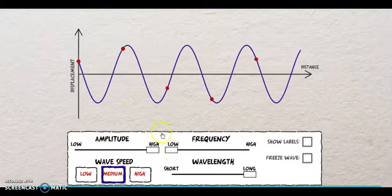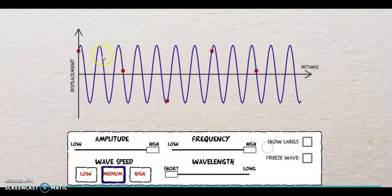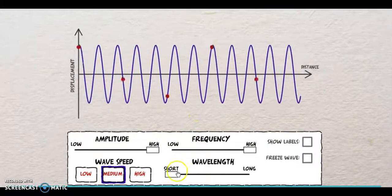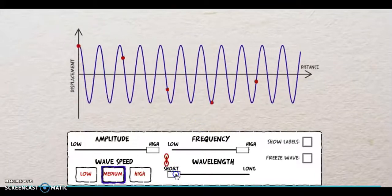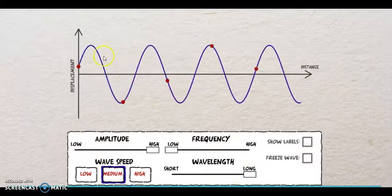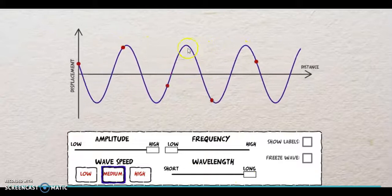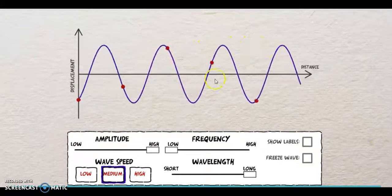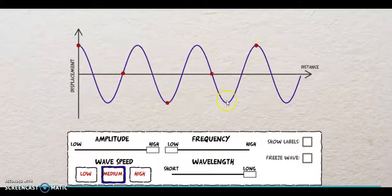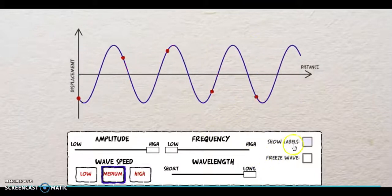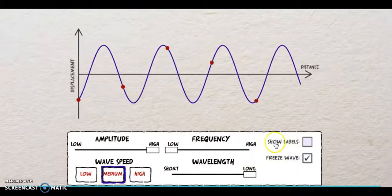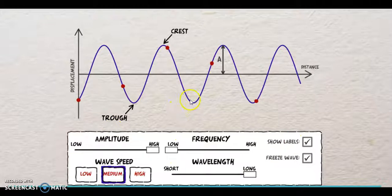Whereas for high frequency, that means there's many more peaks, at least about 8 to 10 peaks for the same distance. So that's basically for frequency, low frequency, less occurrences, high frequency, more occurrences. And you can see wavelength here, wavelength here, long wavelength.